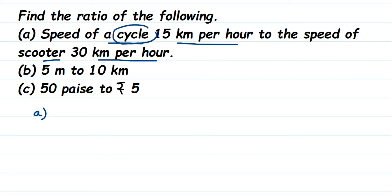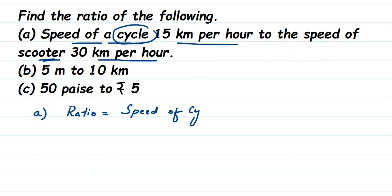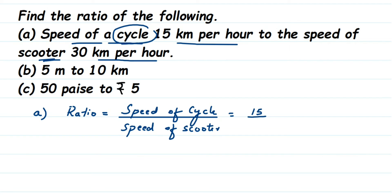The ratio should be cycle first, then scooter. So the ratio will be equal to speed of cycle by speed of scooter. Speed of cycle is 15 kilometers per hour, so I'm going to write down 15 here, and speed of scooter is 30 kilometers per hour, so it is 15 divided by 30.